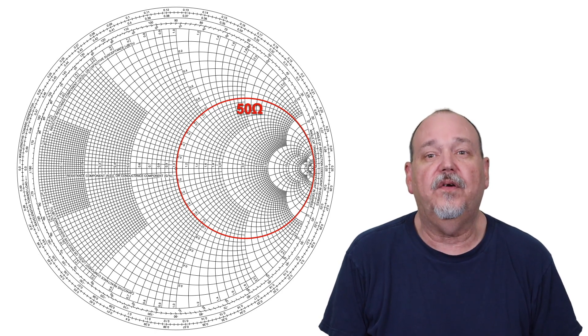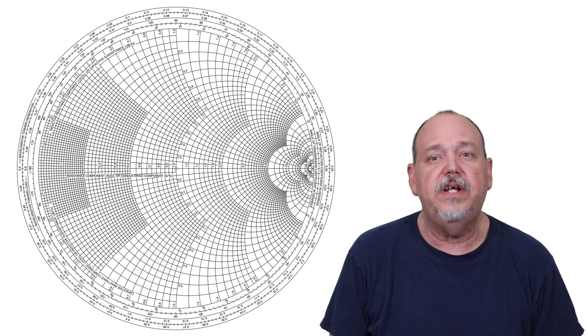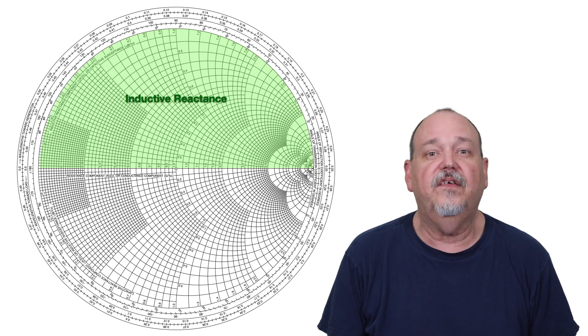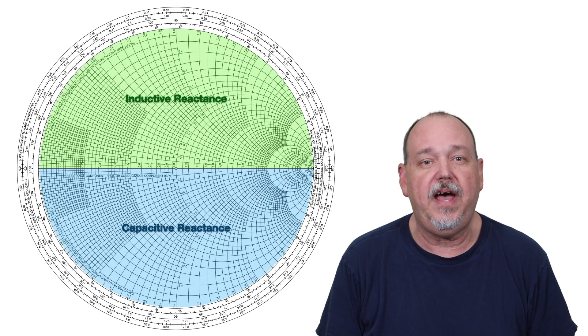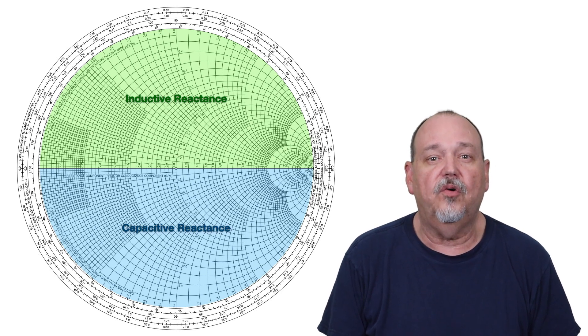Now, let's talk about the reactance part. You know, that stuff after the J? Everything in the region above the line is inductive reactance, or positive, and everything in the region below the line is capacitive reactance, or negative. The reactance numbers are around the outer portion of the big circle, and there are corresponding arcs for these as well.